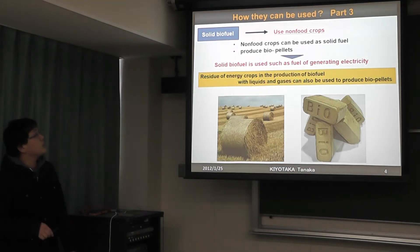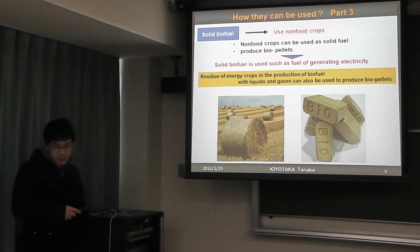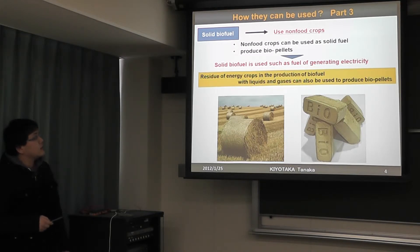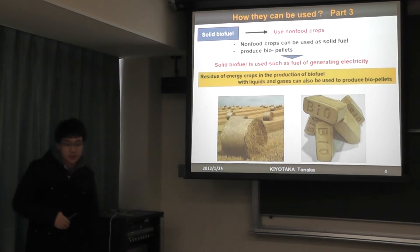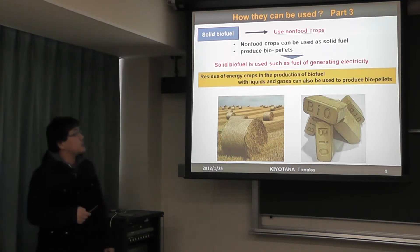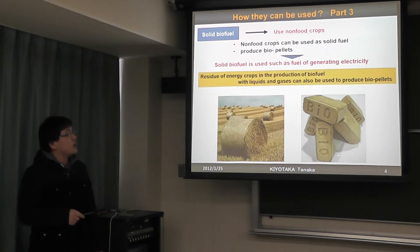Part three is solid bio-fuel. Solid bio-fuel uses non-food crops. Non-food crops can be used directly as solid fuel and can also be used to produce bio-fuel. Solid bio-fuel is used as fuel for generating electricity. Residues from energy crops in the production of liquid and gas bio-fuel can also be used to produce solid bio-fuel.